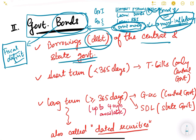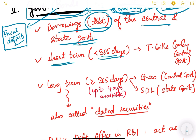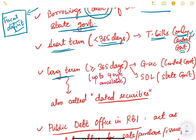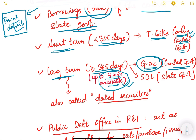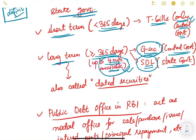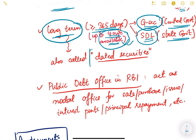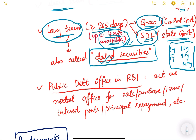Government bonds represent the borrowings of central and state government. Short-term instruments — less than 365 days — are T-bills, and they are issued only by the central government. Long-term bonds — 365 days or more, up to 40 years — are issued by the government. If issued by the central government they are known as G-Secs (government securities), and if issued by state governments they are known as SDLs (State Development Loans). These long-term bonds are also called dated securities.